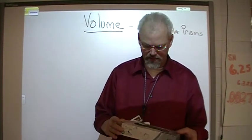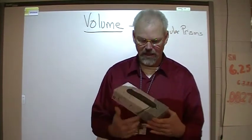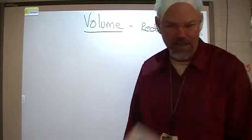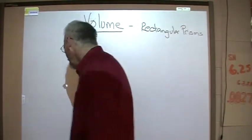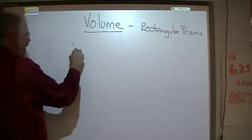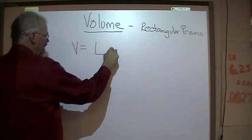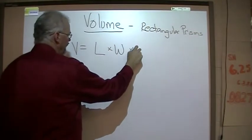We still have the same dimensions. We have a length, a width, and a height. But our formula is different to find volume of a rectangular prism. The formula to find the volume of a rectangular prism is just length times width times height.